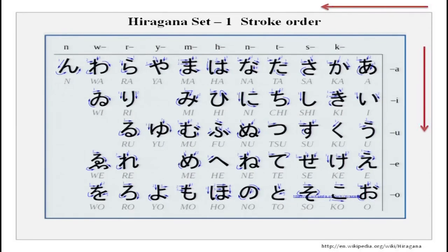You will notice that all these consonants — k, s, t, n, h, m so far — are all joining with vowels, and the syllables will always have a vowel at the end. No syllable is complete without a vowel, except for one which we are going to do very soon.